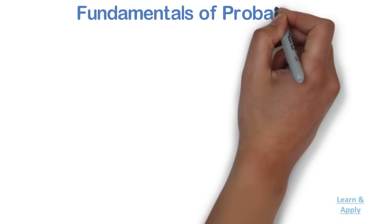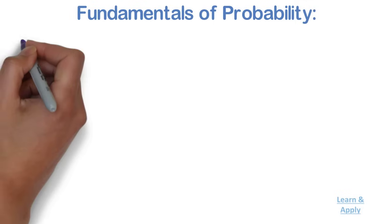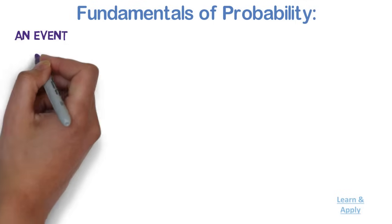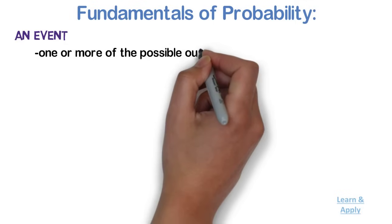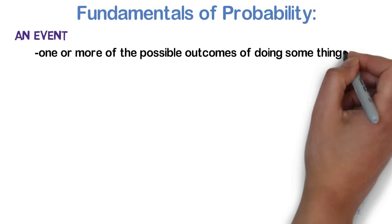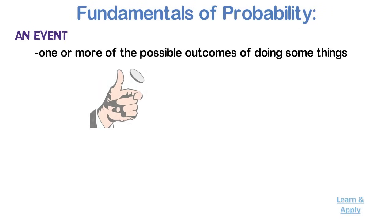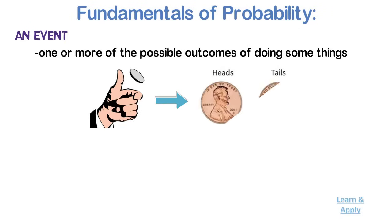Fundamentals of Probability. An Event: an event is one or more of the possible outcomes of doing something. For example, if we toss a coin, getting a tail is an event and getting a head is another event.